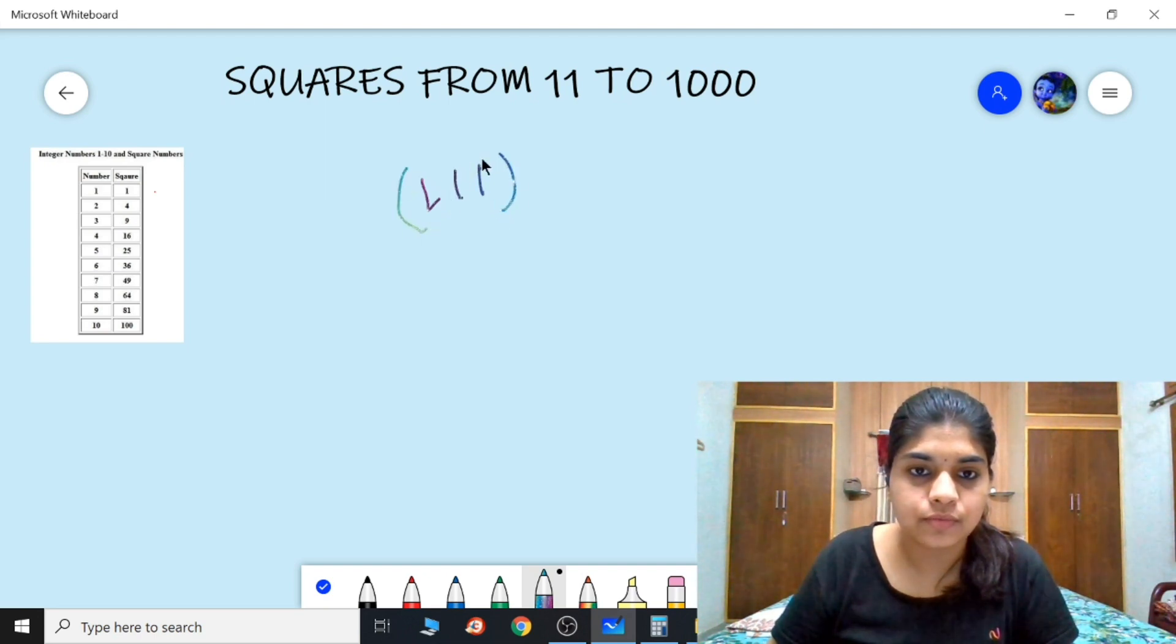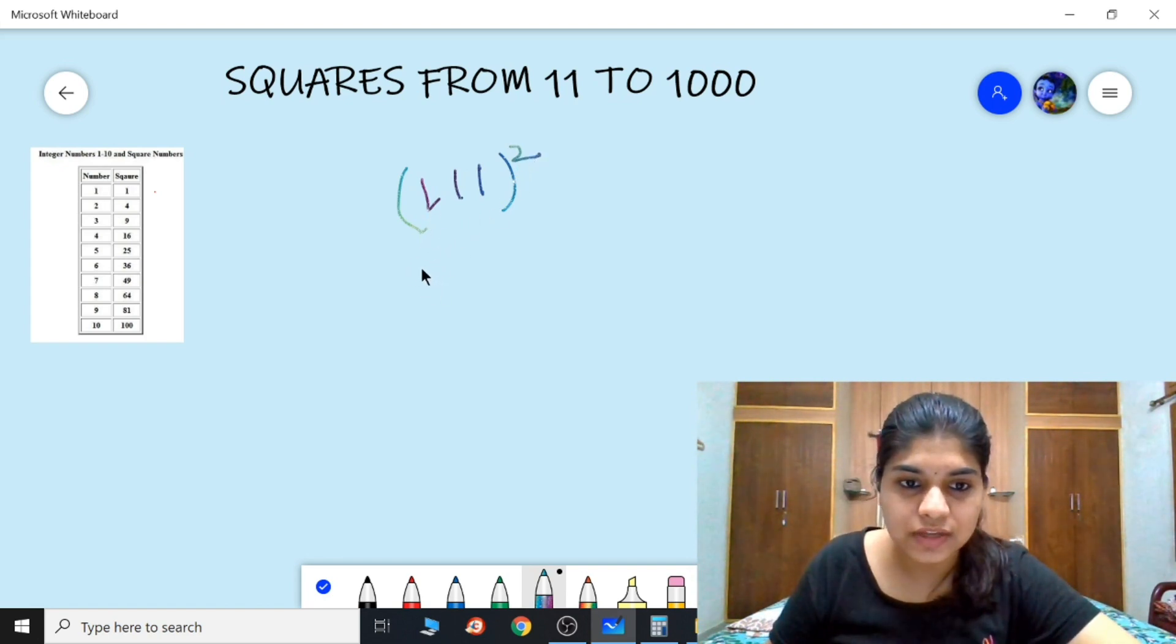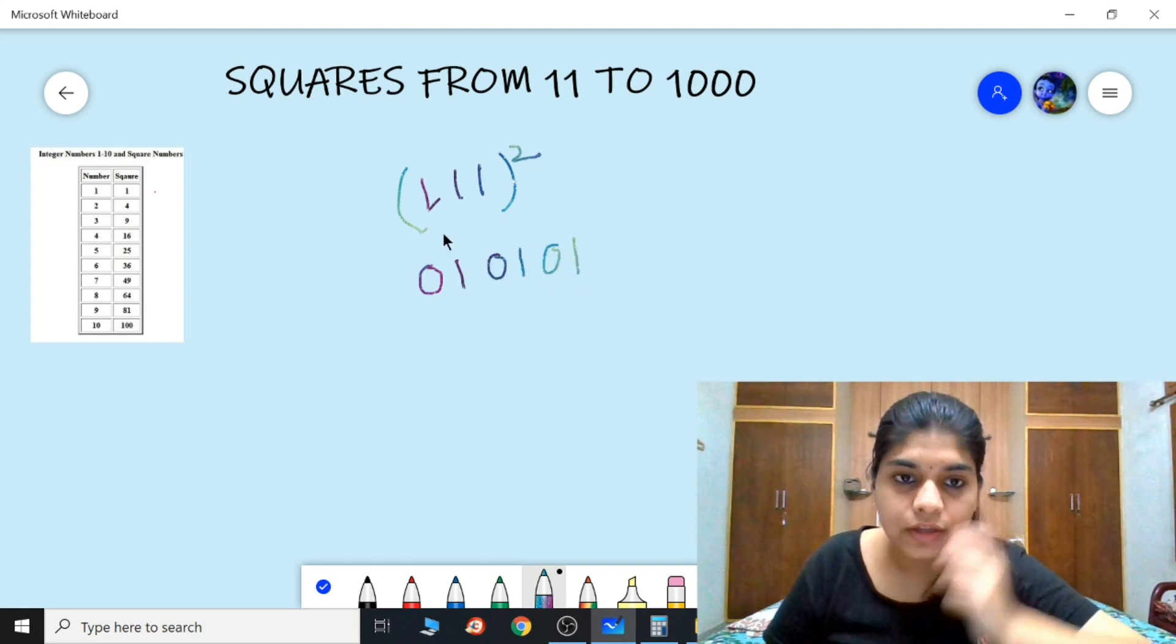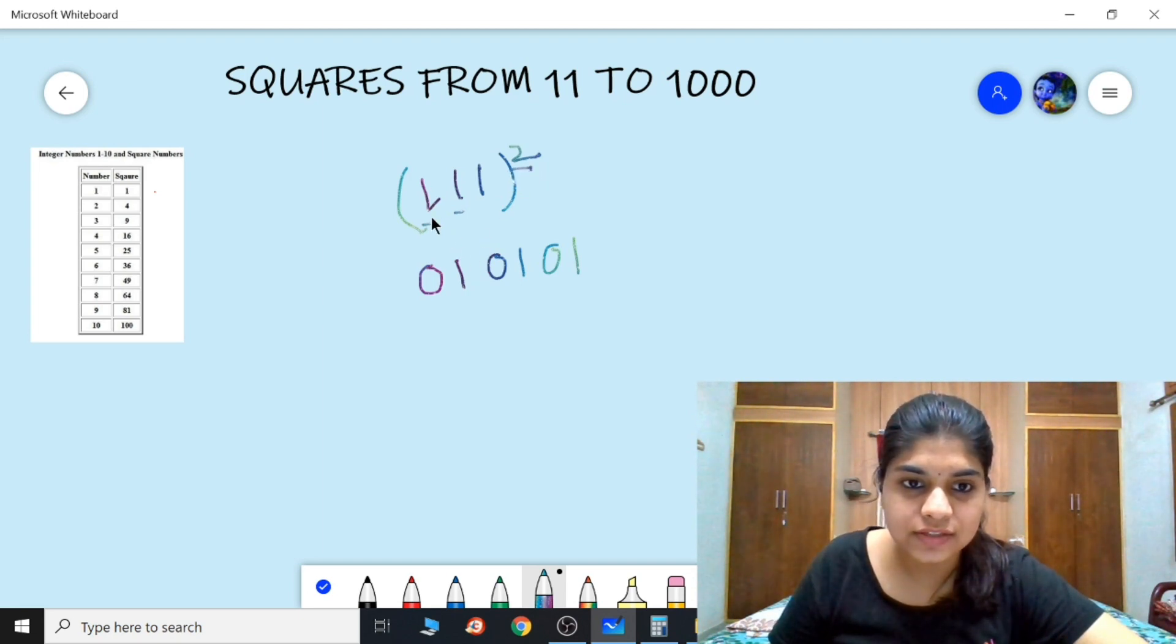Three-digit numbers, I'm going to take one example. Let's take 111 squared. So now this is a little bit tricky but easy. First, one squared is one. Do not write one, you always have to write 01, and then this is 01, and square of one is 01.